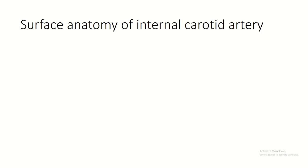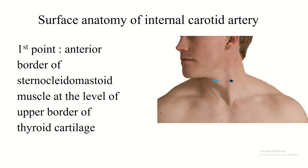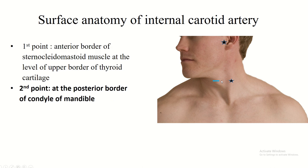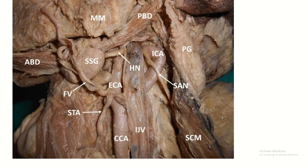Surface anatomy of the internal carotid artery. First point: at the anterior border of the sternocleidomastoid muscle at the level of the upper border of the thyroid cartilage. Second point: at the posterior border of the condyle of the mandible, in front of the tragus. Join these two points.